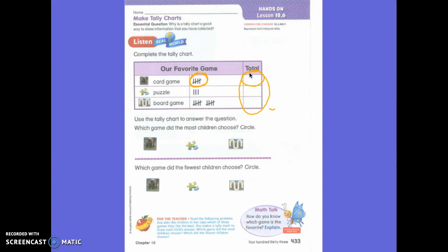How many chose puzzles? Three. Very good, so write that in the total please. And then how many chose board games? Ten. There you go, okay, ten in your total.